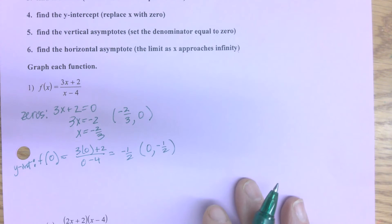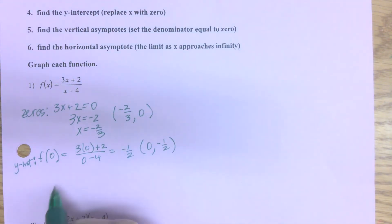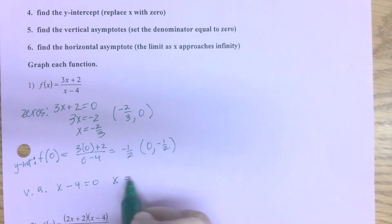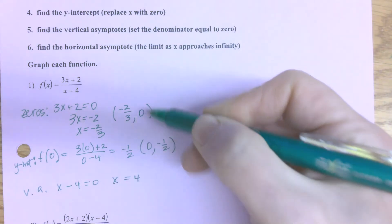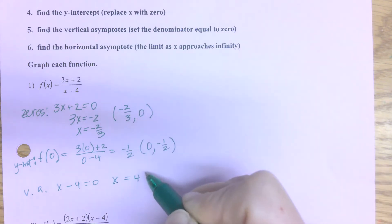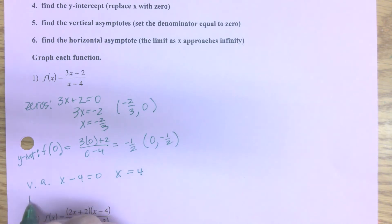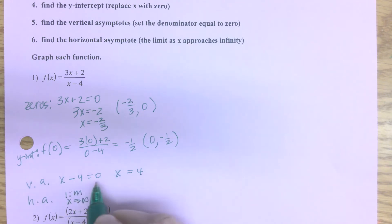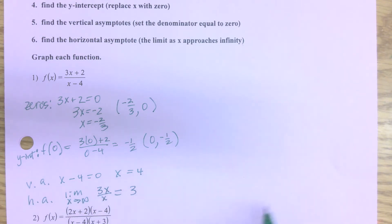Next I find my vertical asymptotes by setting the denominator equal to zero. So x - 4 = 0, giving a vertical asymptote at x = 4. Remember: zeros and y-intercepts are points, while vertical and horizontal asymptotes are lines. My horizontal asymptote is found by taking the limit as x approaches infinity. I take the lead terms — 3x over x — and reduce, leaving me with 3. So I graph that as y = 3.